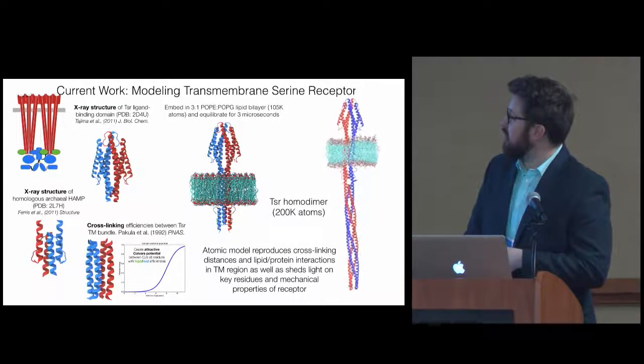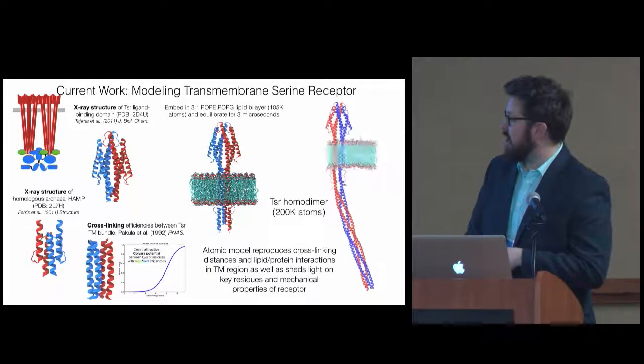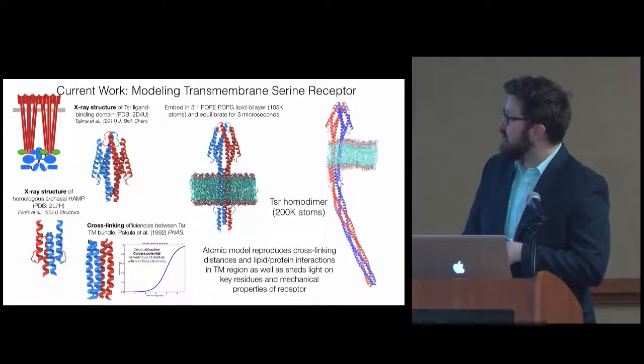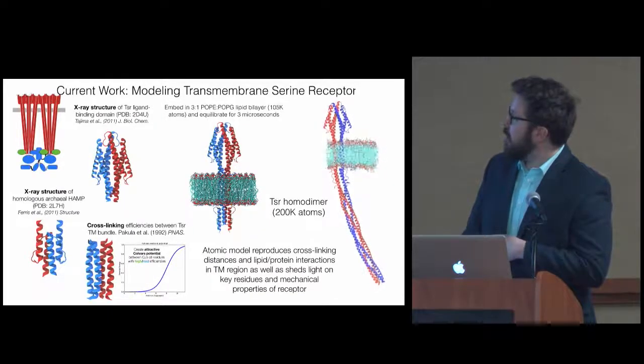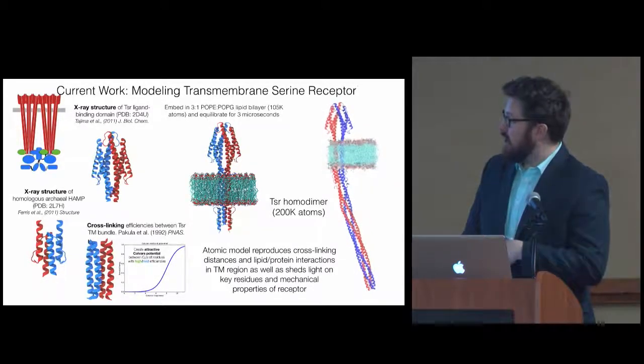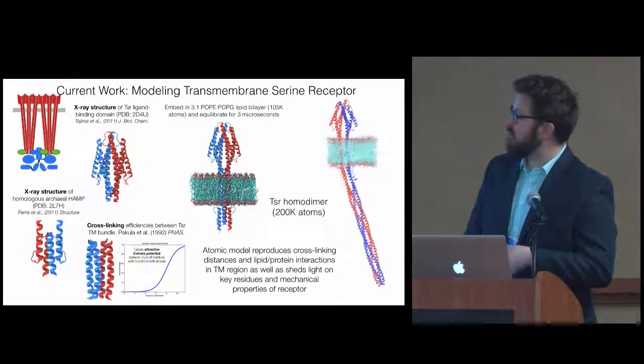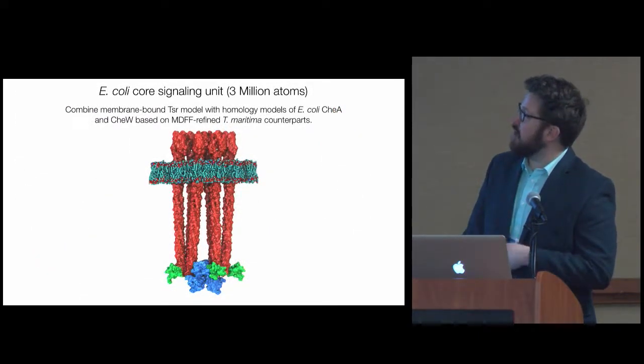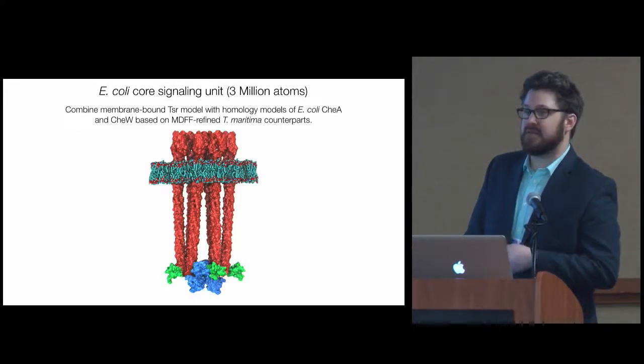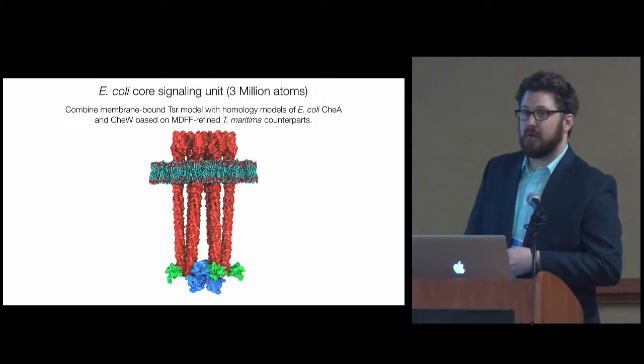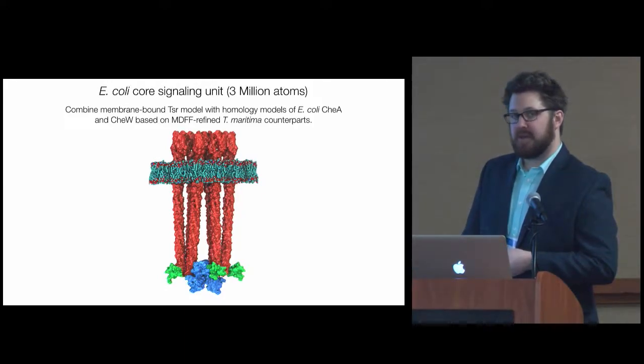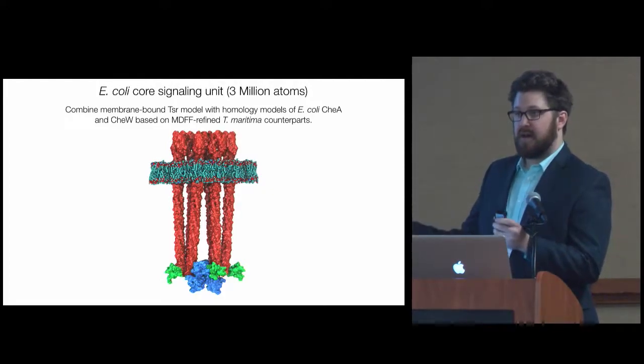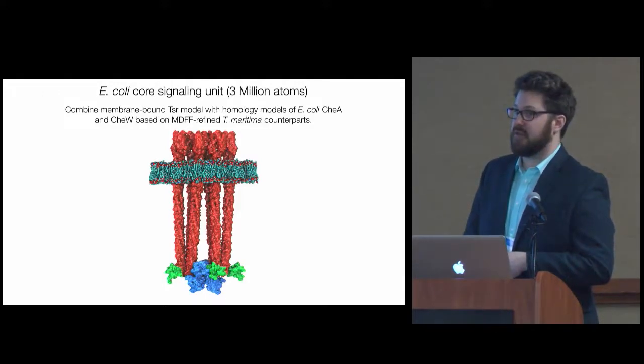This atomic model reproduces the cross-linking distances and the lipid-protein interactions that are known from the literature, as well as it sheds light on key residues at the various interfaces between these domains and mechanical properties of the receptor that we're still investigating further. Combining that model of the full membrane-bound serine receptor with homology models of the E. coli proteins, we can actually derive a full model of this fundamental signaling unit from the E. coli array. Once you have this, it's a relatively simple matter to obtain as large an array as you need for the questions you want to ask.